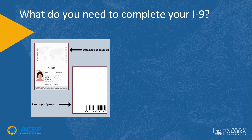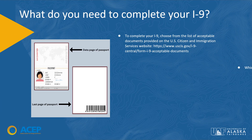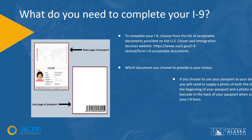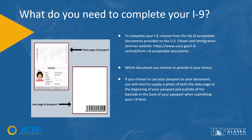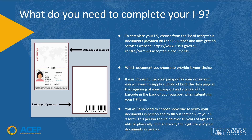To complete your I-9, choose from the list of acceptable documents provided on the U.S. Citizenship and Immigration Services website. Which document you choose to provide is your choice. Remember, if you choose to use your passport as your document, you will need to display a photo of both the data page at the beginning of your passport and a photo of the barcode at the back of your passport when submitting your I-9 form.